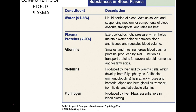Other proteins include globulins such as alpha globulins, which transport metal ions and lipids, and beta globulins, which transport iron ions and lipids. Gamma globulins serve as antibodies that immobilize pathogens — we'll talk about that when we discuss the immune system. The plasma protein fibrinogen participates in blood coagulation and clotting, converting into long insoluble strands of fibrin.